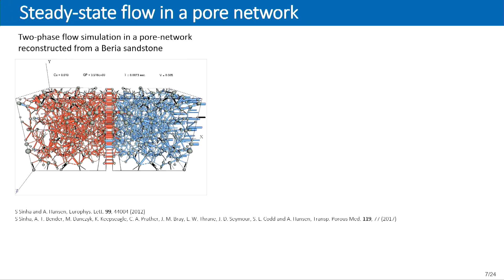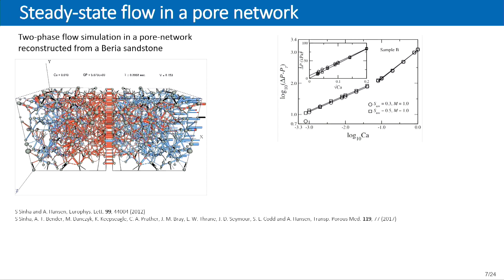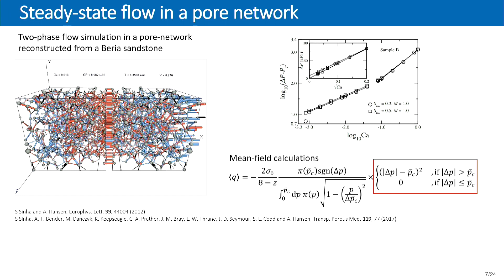We then went further and applied this to an OAR network — a pore network reconstructed from CT scan images of real Berea sandstone. Simulating two-fluid flow through this real network, we get the same behavior: at low pressure drops and low capillary numbers, we see non-linear behavior with roughly quadratic dependence, and at high pressure drops the behavior becomes linear. We also did analytical calculations and obtained the same result: a threshold pressure below which there is no flow, above which behavior is first quadratic then linear.